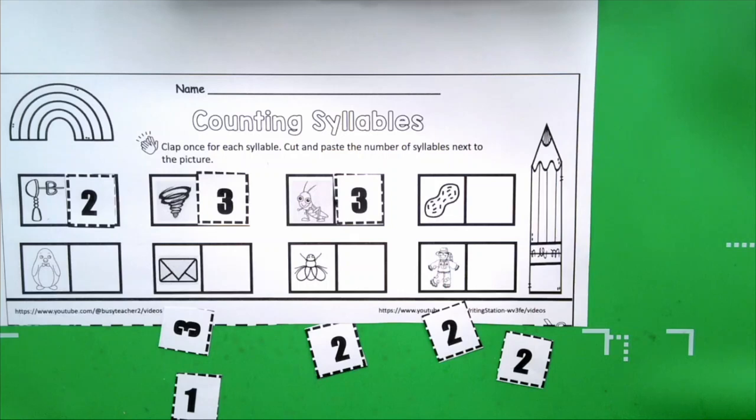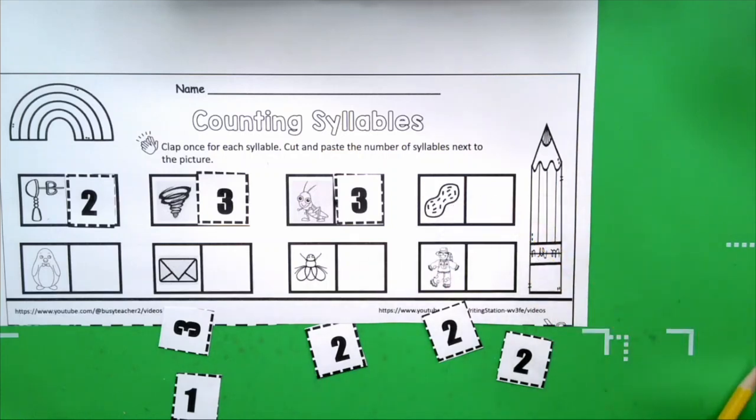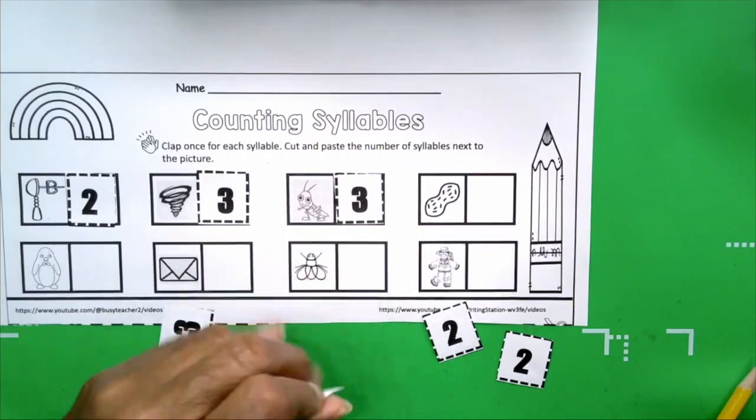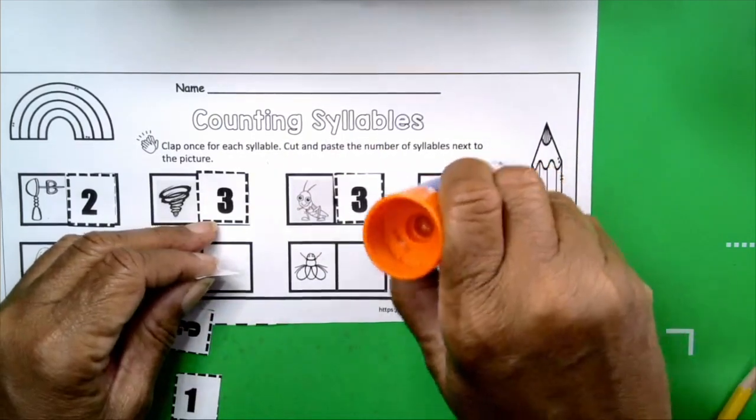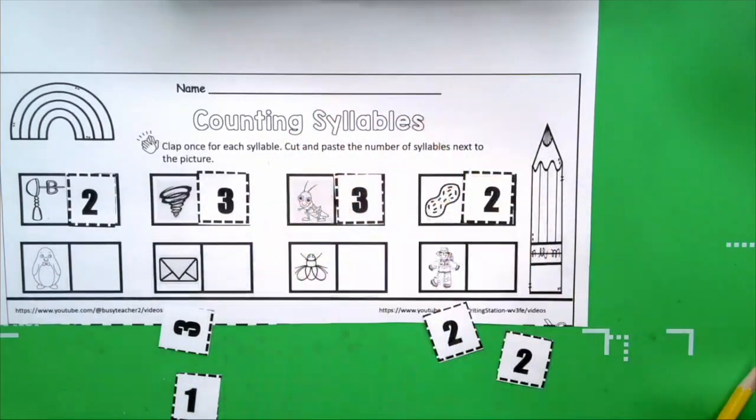The next picture. Peanut. Peanut. Get your hands ready. Peanut. How many claps? Two. How many syllables? Two. Very good. Let's get our number two and we're going to paste it. Very good.